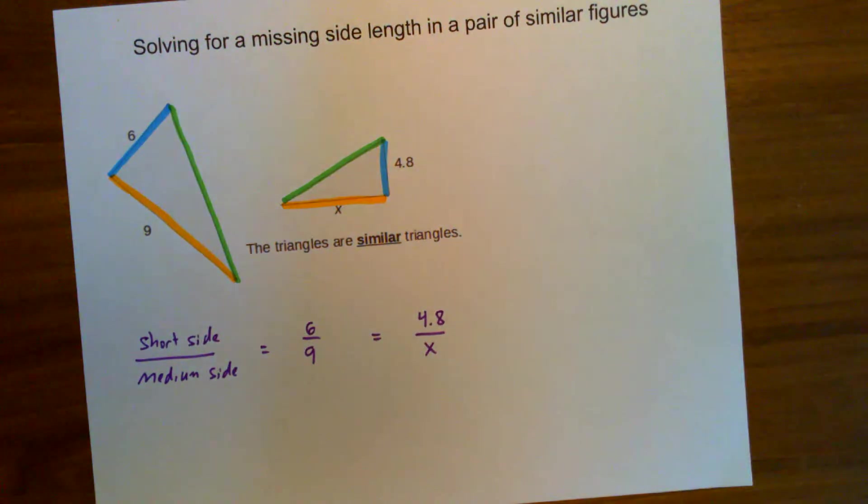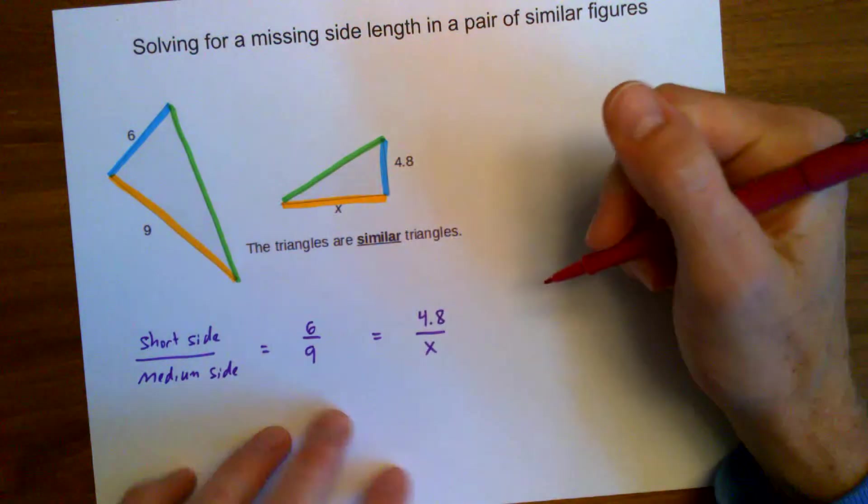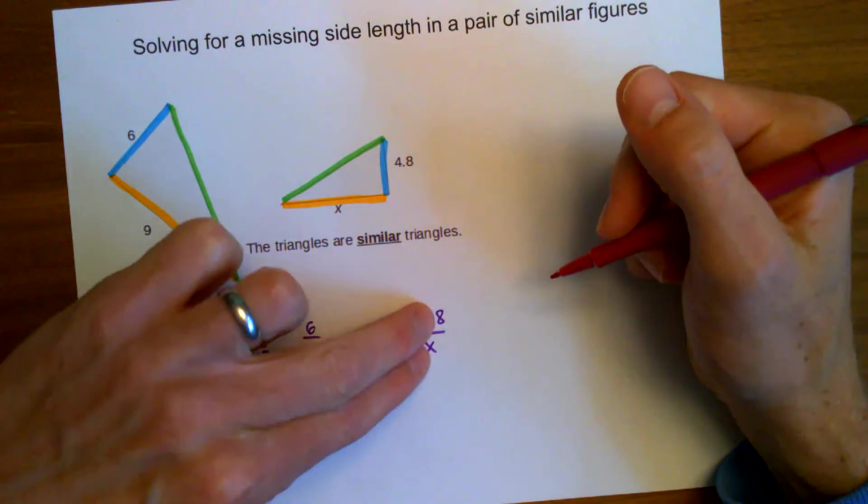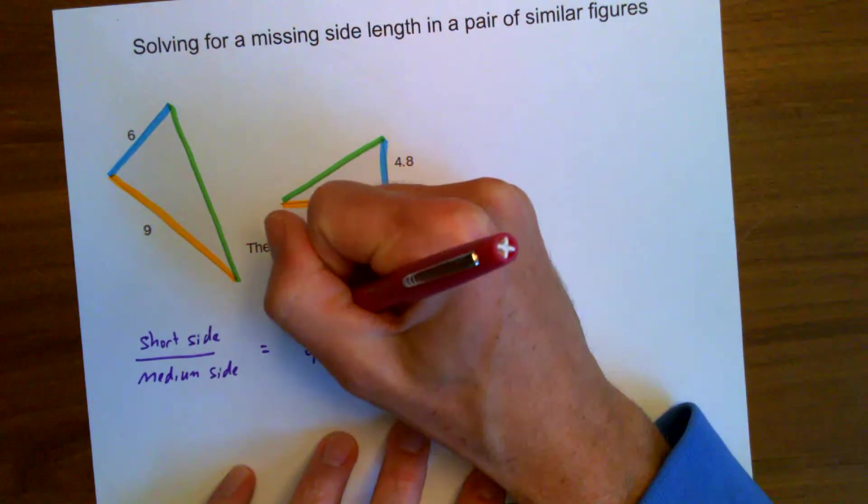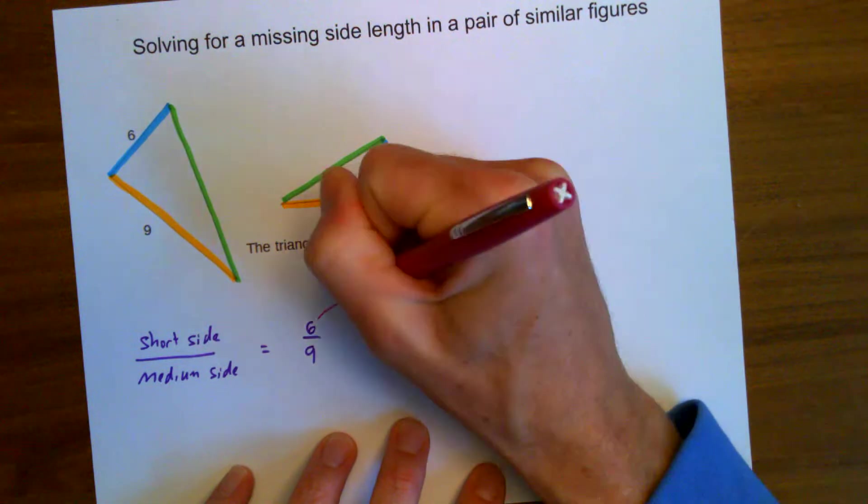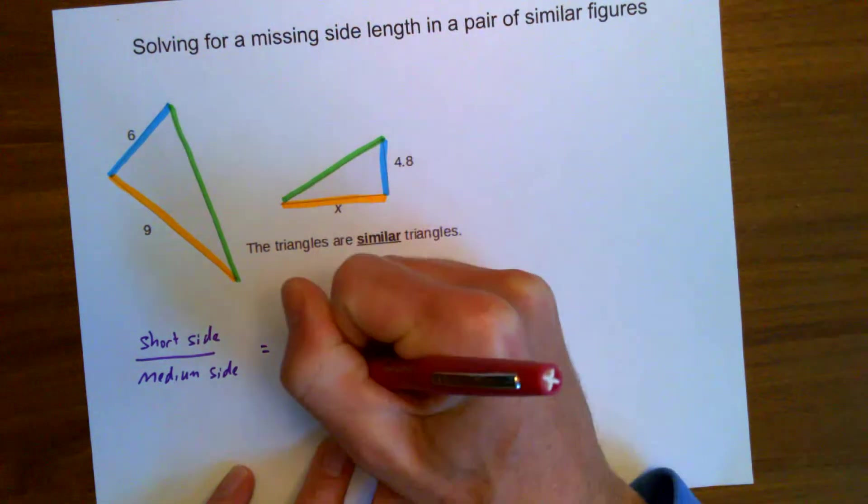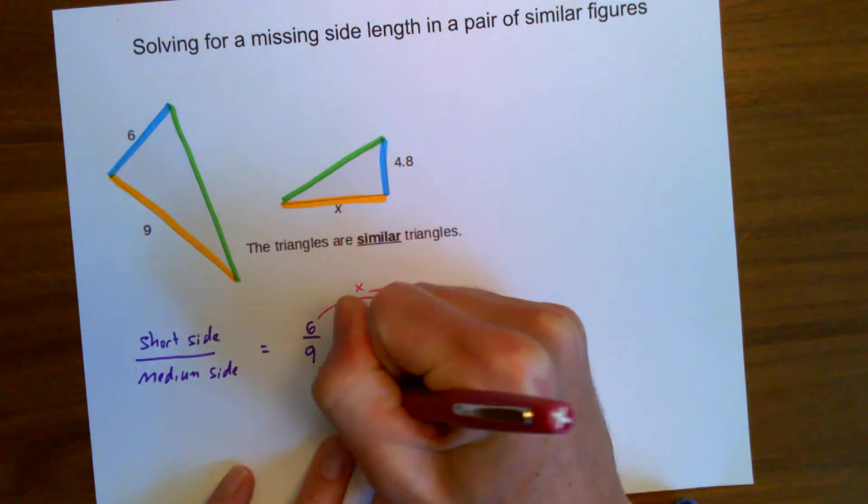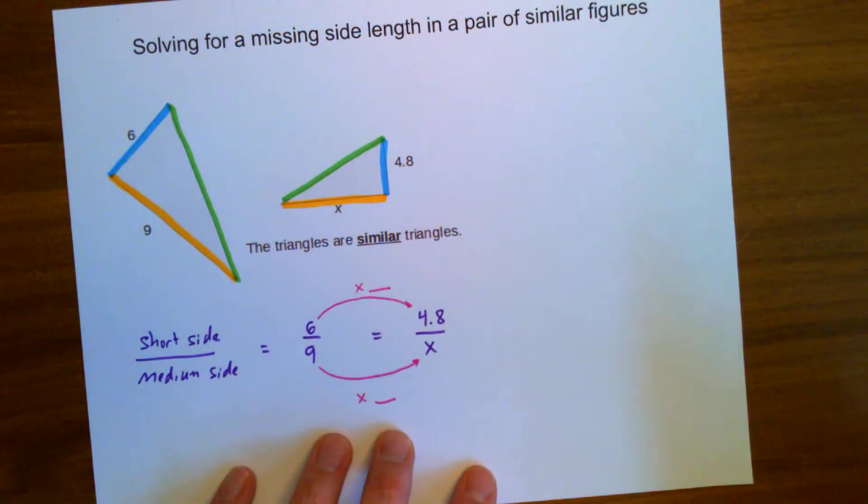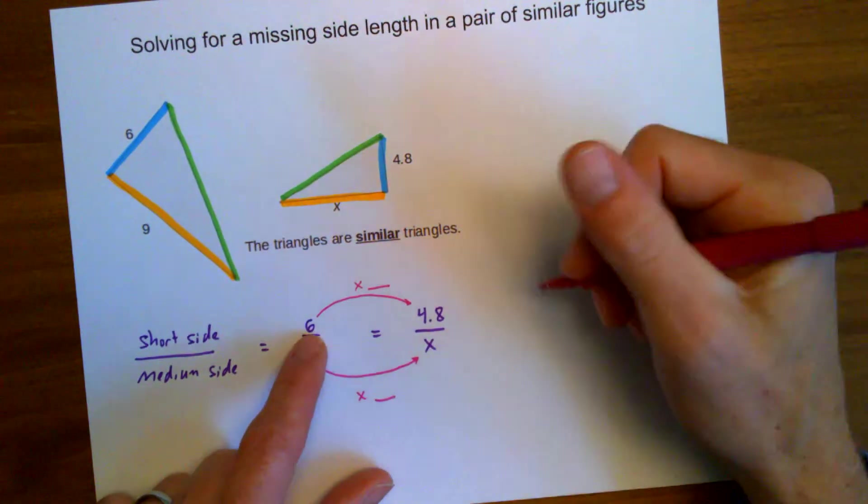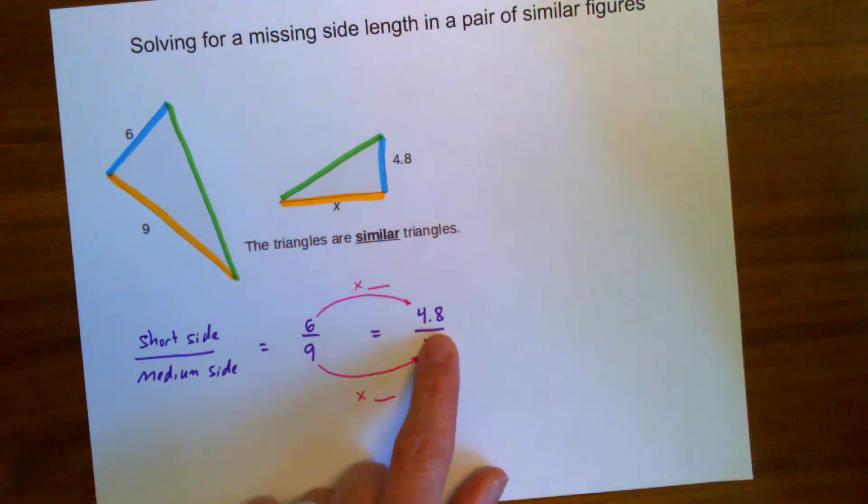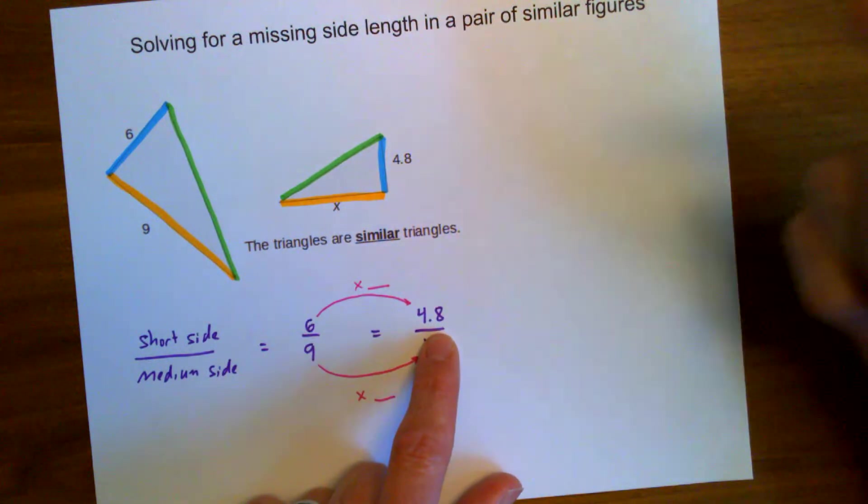The way I'll do this is let's find a scale factor. In other words, what number am I multiplying these sides by to get these sides? So what am I multiplying by to get the new side lengths? So 6 times something equals 4.8. Well, what is that something?